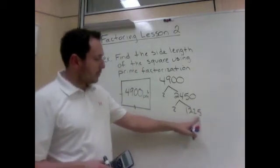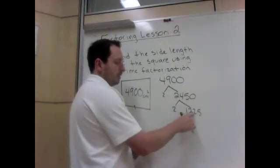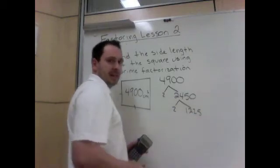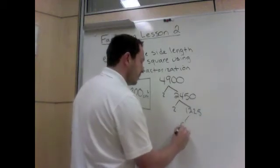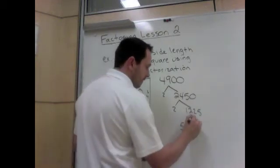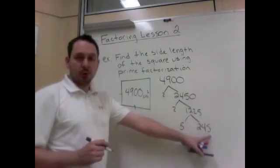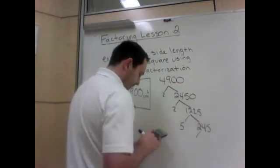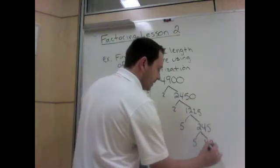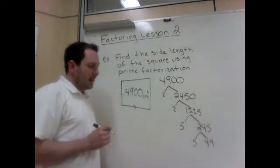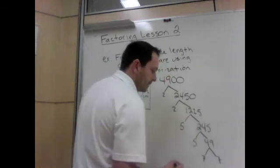Now this is no longer an even number, so we're done with 2s. Let's look for 3. 1 plus 2 is 3, plus 2 is 5, plus 5 is 10. No, it does not divide by 3. But anything that ends in 0 or 5 divides by 5. 1225 divided by 5 is 5 times 245. And again, it ends in a 0 or a 5, so it divides by 5. 245 is 5 divided by 49. Now it no longer divides by 5, so try 7. And 49 is 7 times 7.